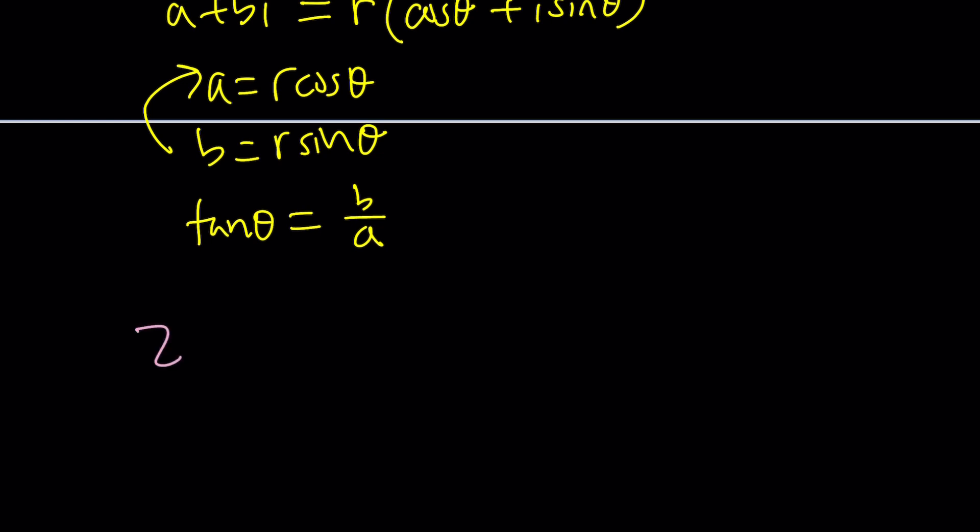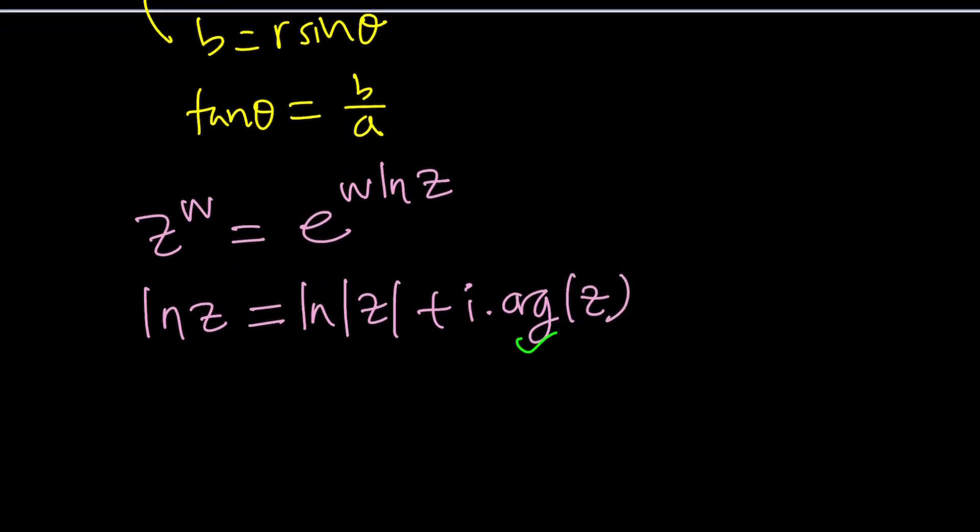Whenever you have something like z to the power w, it can be written as e to the power w ln z. Of course now we need to talk about the complex logarithm. There are multiple values, so we write ln z, ln of a complex number, as ln absolute value of z plus i times the argument of z.